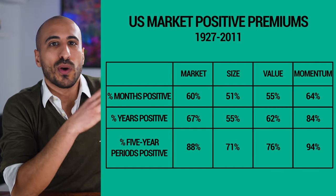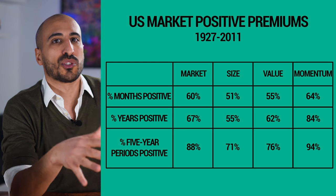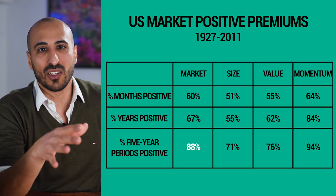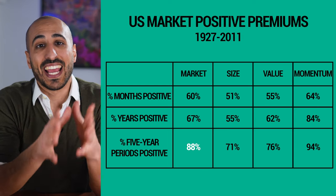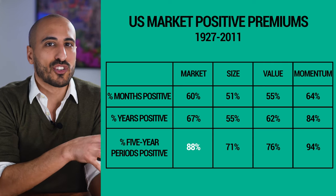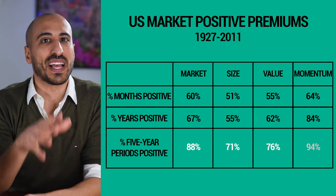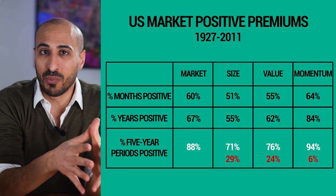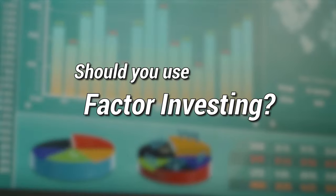A third problem is that even using this strategy, you will underperform at times — you might have to go through 10 long years of bad performance, which not many people can bear. A table showing US stock market data between 1927 and 2011 looks at how often these factors delivered positive premiums. The market beat T-bills 88% of five-year periods; smaller companies beat large companies 71% of the time; value beat growth 76% of the time; and momentum 94%. But there is still a real probability of 5- or 10-year periods of underperformance, as happened with small cap and value over the last decade.